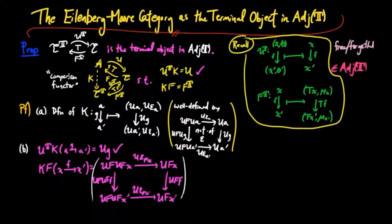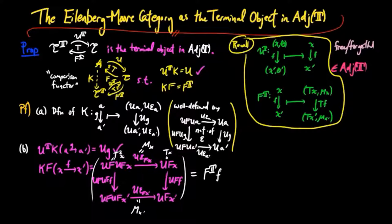Also note that the T-actions are equal to the multiplication morphisms for the monad, since the adjoint situation F left adjoint to U induces T. Therefore, K(F(f)) is equal to the free functor of the Eilenberg-Moore construction applied to f.